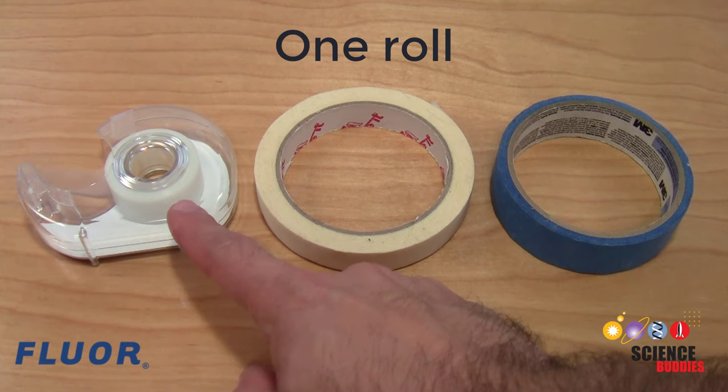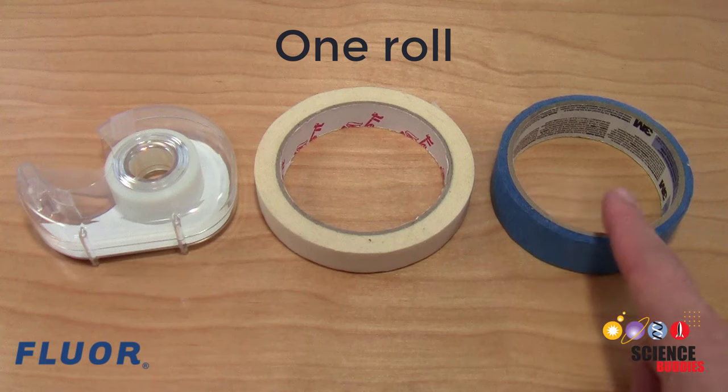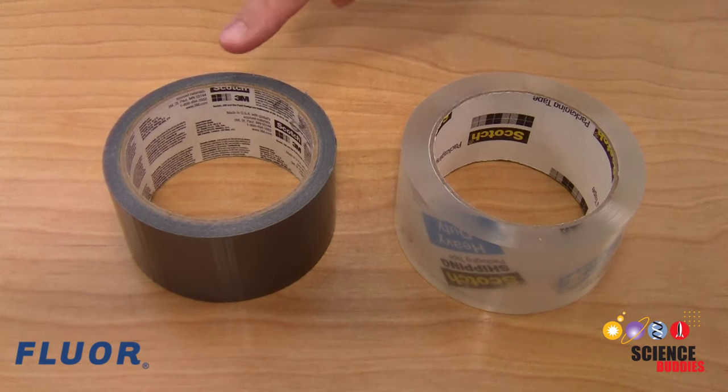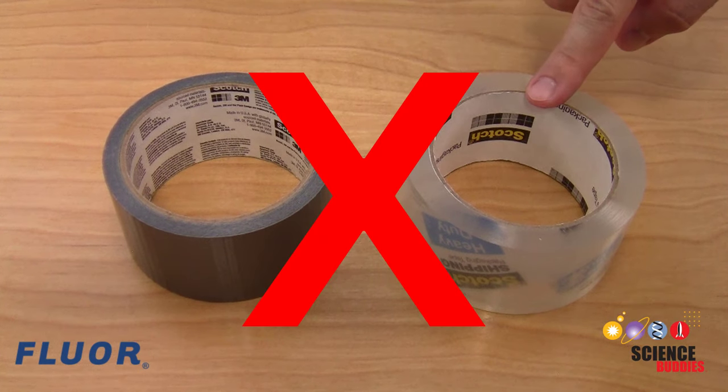One roll of clear office tape, masking tape, or painter's tape up to 1 inch or 2.5 centimeters in width is allowed. Stronger tapes such as duct tape and packing tape are not allowed.